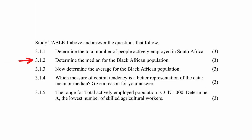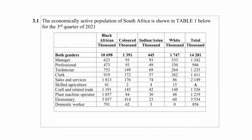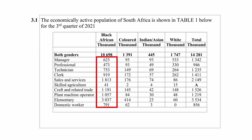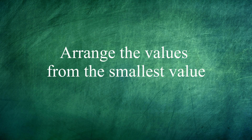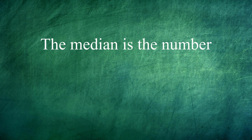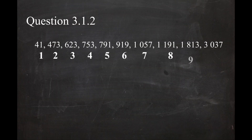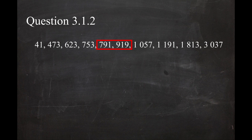In question 3.1.2 you are instructed to determine the median for the Black African population. The first step to determining the median is to arrange the data in ascending order — from the smallest value to the largest value. The median is the number that divides the number of values in the data set into two equal groups. Because there is an even number of values in the data set, you will have to find the mean of the middle two values, and that answer will be the median.